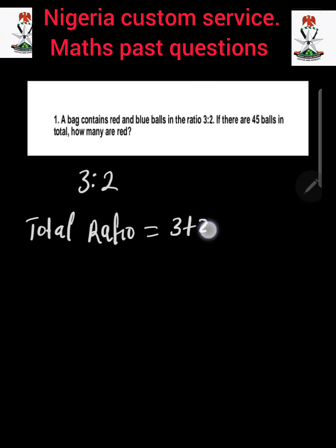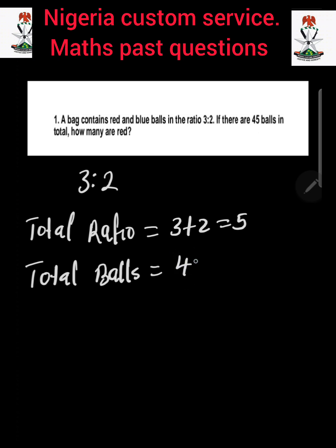So 3 plus 2 is going to give us a total ratio of 5. The next thing we are going to do is to get the total number of balls from the equation. There are 45 balls in total. So we are going to divide the total balls by the total ratio: 45 divided by 5, which gives us 9.